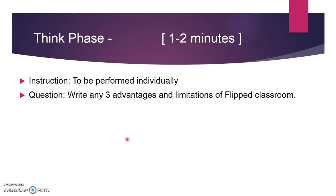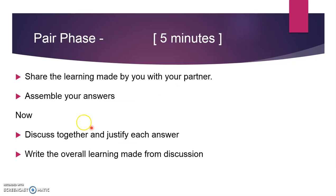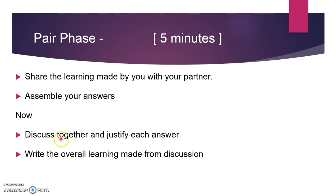Hope you have done the activity. Now let us move on to the next phase — the pair phase. Over here you are expected to share your learning with your partner. Assemble all your answers together and discuss and justify each answer: why do you think a particular statement is an advantage or a limitation of flipped classroom. After doing this, write all the overall learning made from the discussion in the pair phase. You get five minutes for this activity.